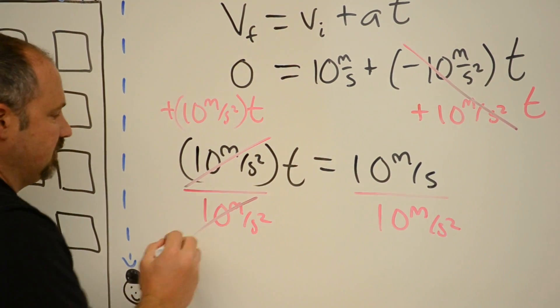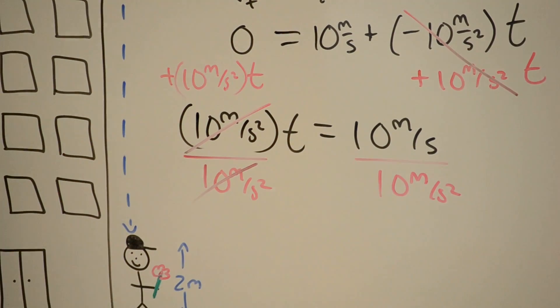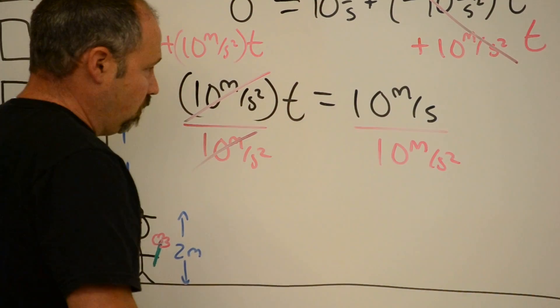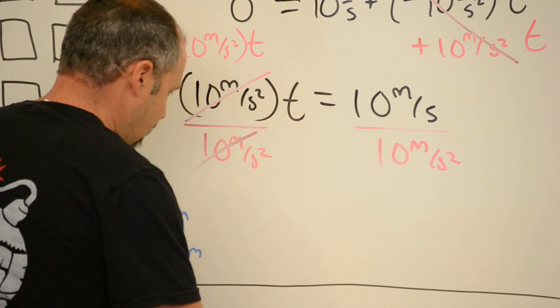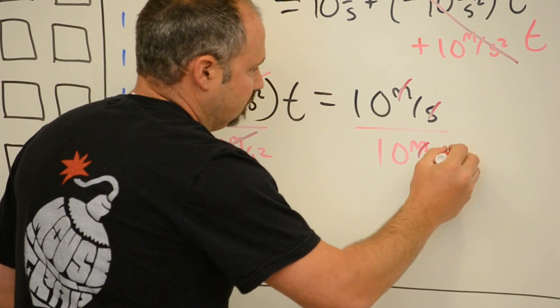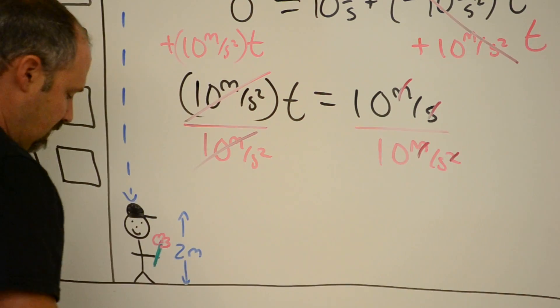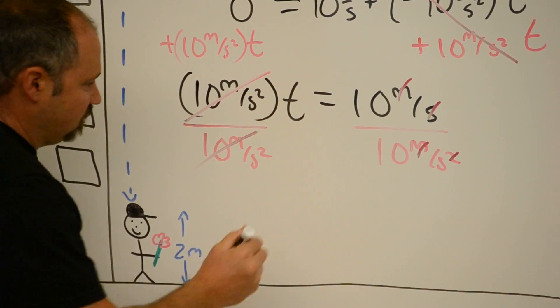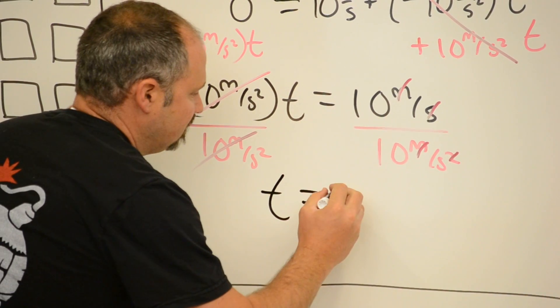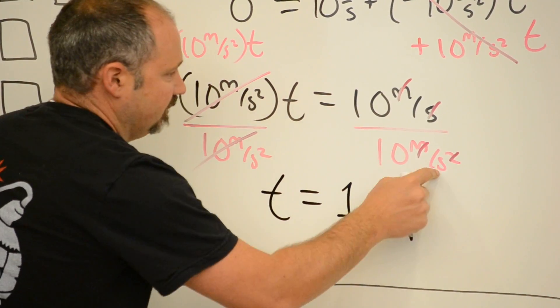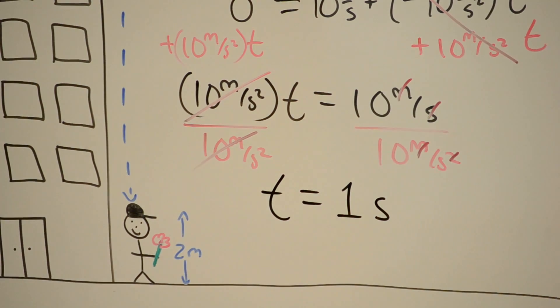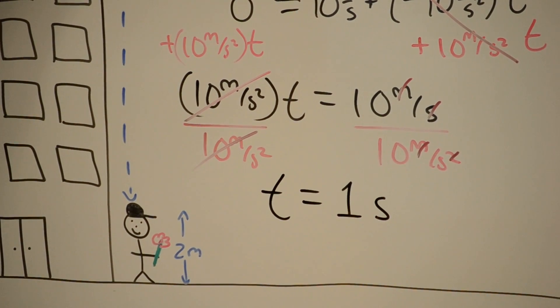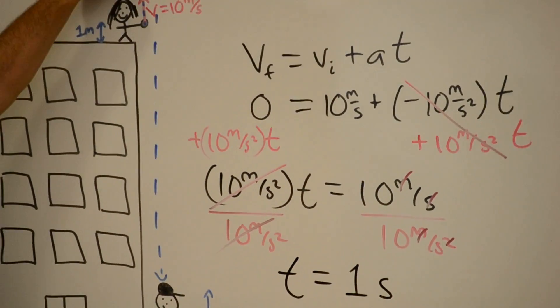These guys cancel. You divide something by itself, it equals one. And then here, watch how the units cancel. Cancel, cancel, cancel, cancel. And one of these. And then 10 divided by 10 is just one. So I have t equals one second. This guy flips up the top. So it's going to take one second for the balloon to reach its highest point. Excellent.